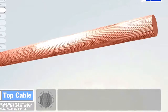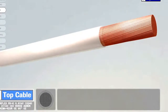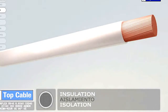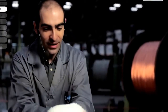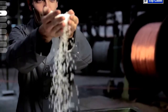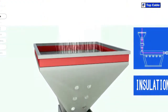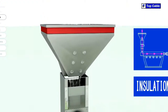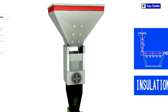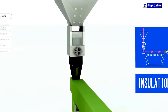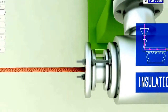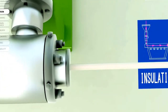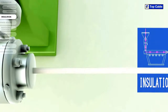The next process in the manufacture of electrical cables is the insulation. This is when we place an insulating cover over the conductor to prevent current leakages. The insulating material is added by a process of extrusion at high temperature. Several insulating materials may be used — PVC, EPR, XLPE, etc. Different insulation materials may be used depending on the characteristics of the cable required.